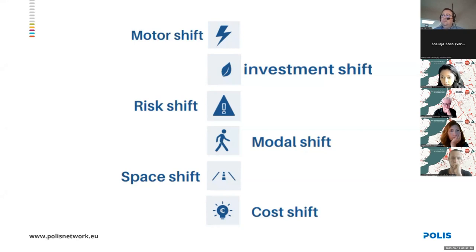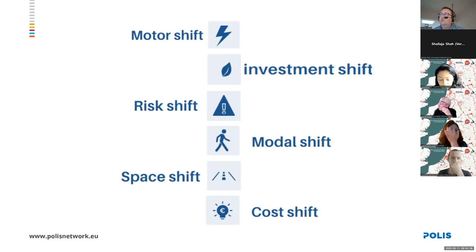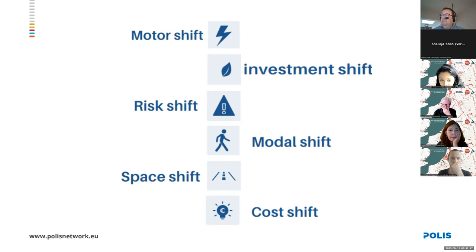We need to shift risks. If you look at who is currently suffering from the mobility system in view of pollution, road safety, or lack of access and lack of entry into opportunity, these risks are not equally distributed. Mobility poverty is an aspect, but also vulnerability in traffic is an issue.